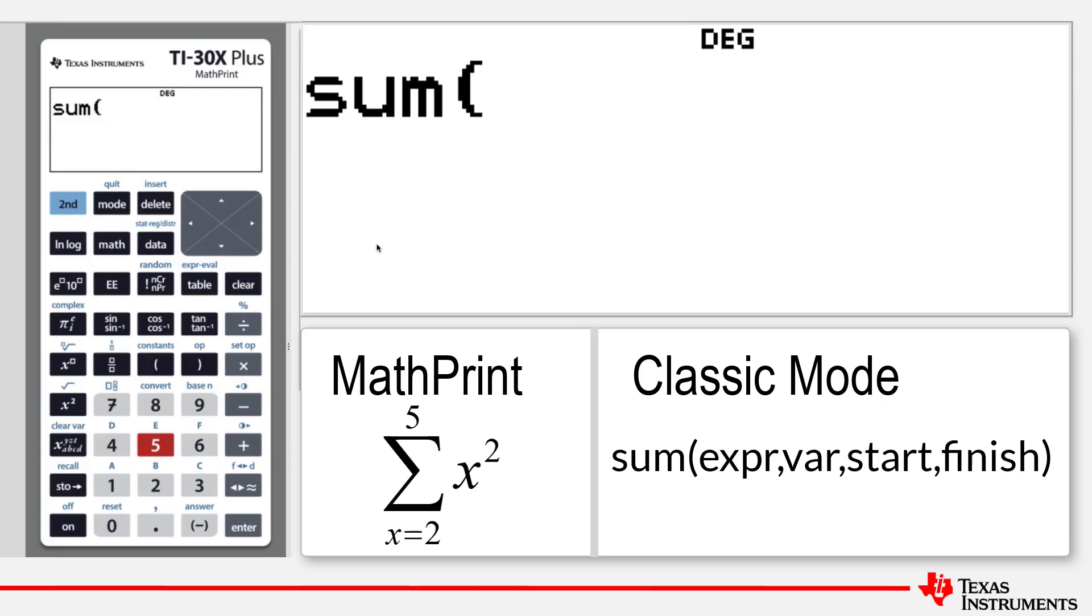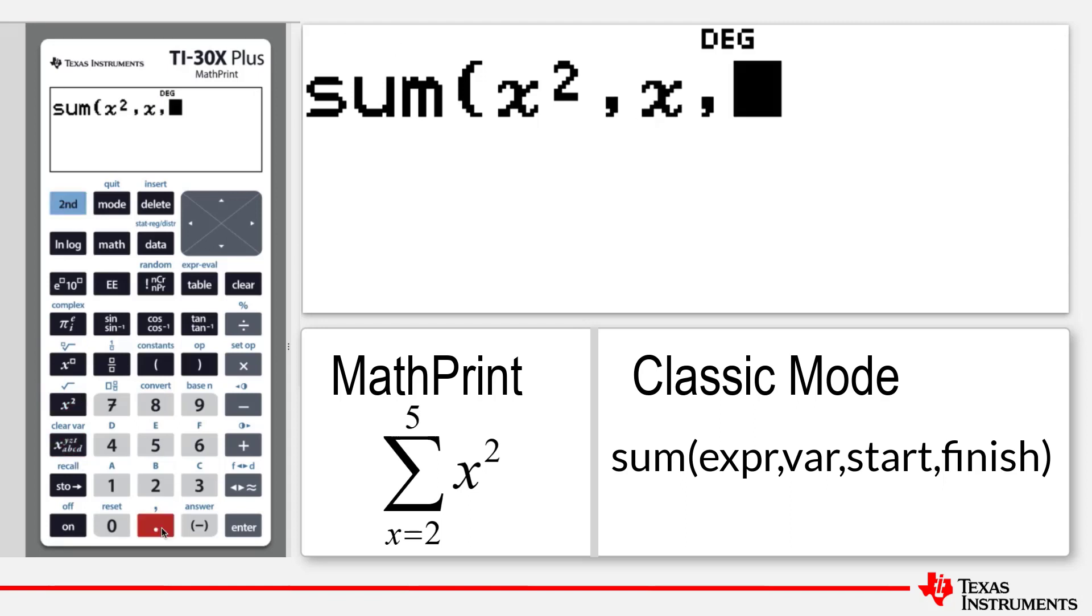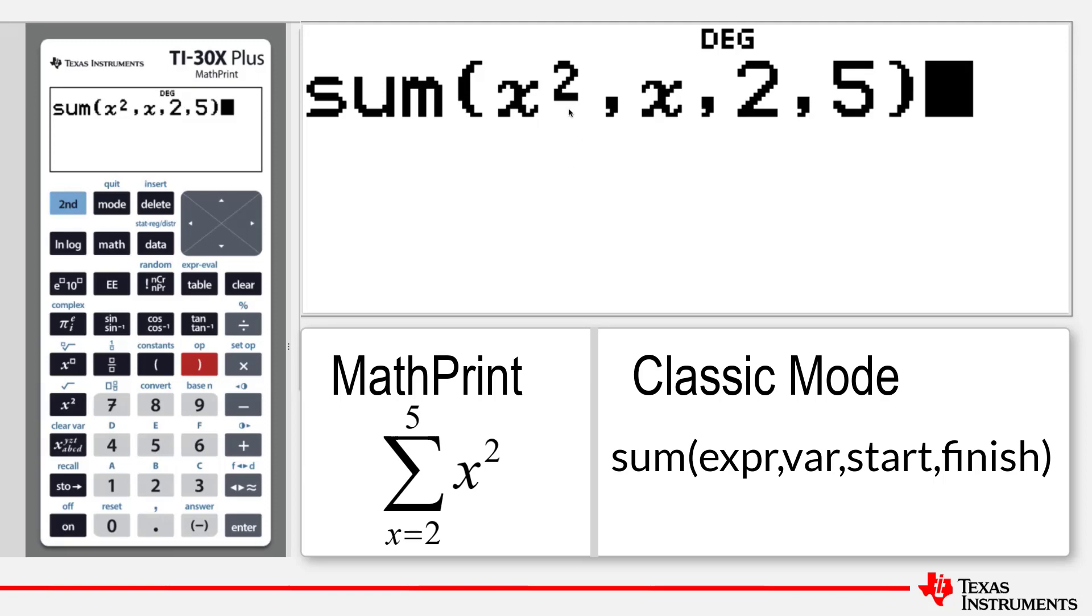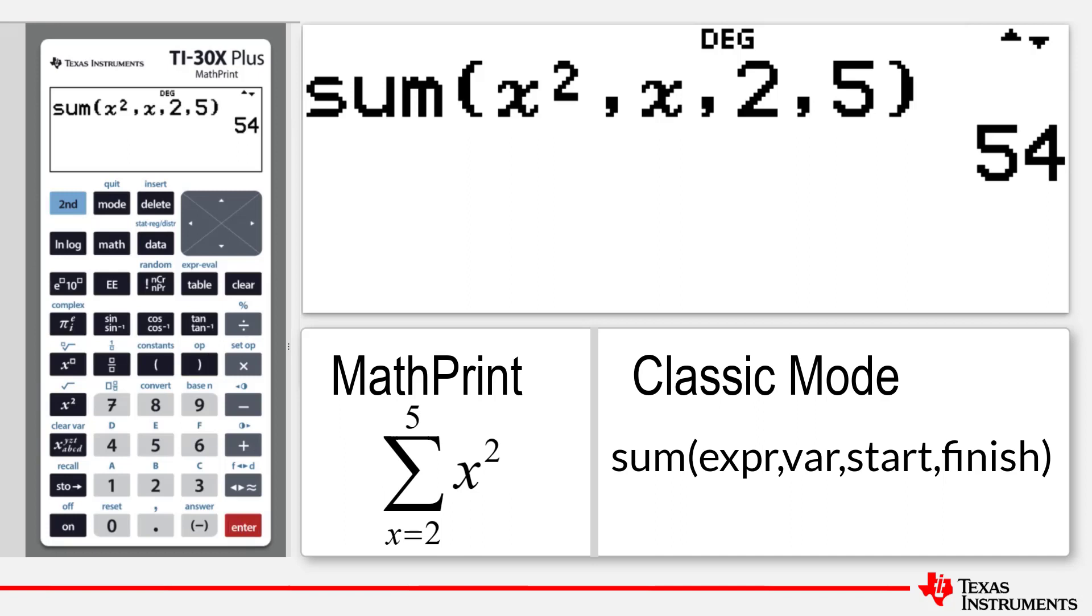Once again, you will need to know the calculator syntax for our same summation of x squared from x equals 2 to x equals 5. You will need to enter as so. So we're interested in the sum of x squared from x equals 2 to x equals 5, and we get the same result of 54.